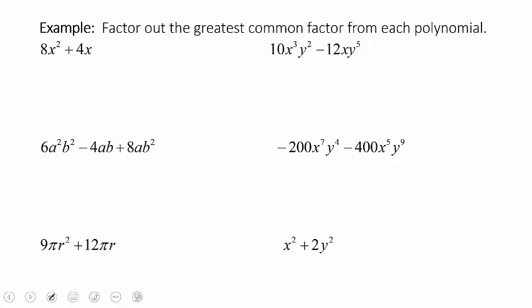In this first example, 8x² plus 4x — what is the GCF between those two? First, look at the numbers: 8 and 4. I always look at the smallest number first, so that would be 4 in this case. Does 4 go into 8 evenly? Yes, it does. So 4 is the greatest common factor among the numbers.